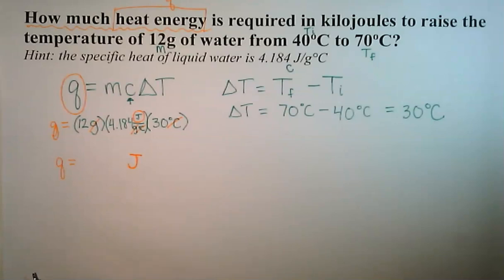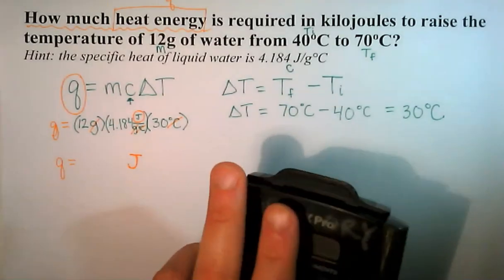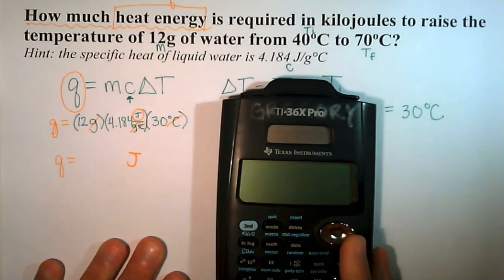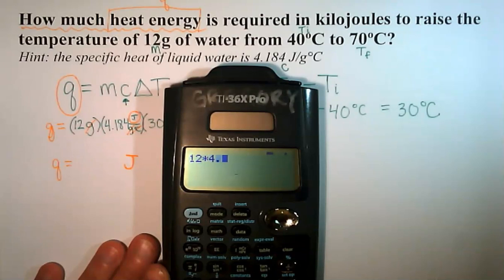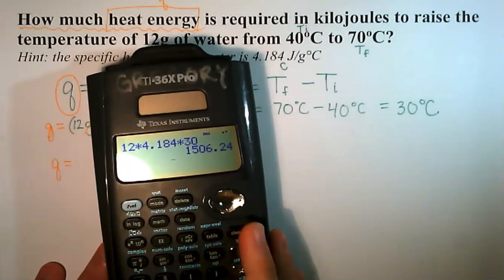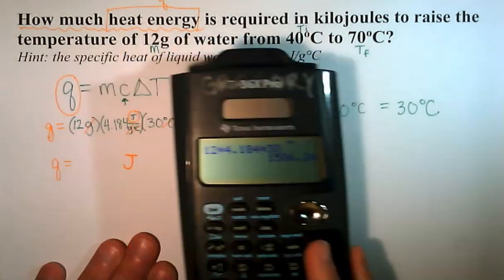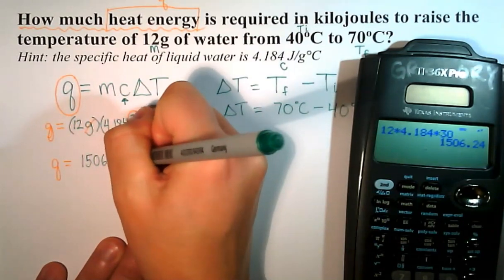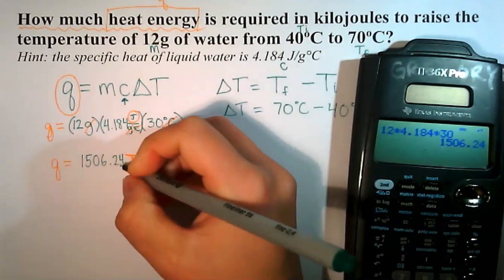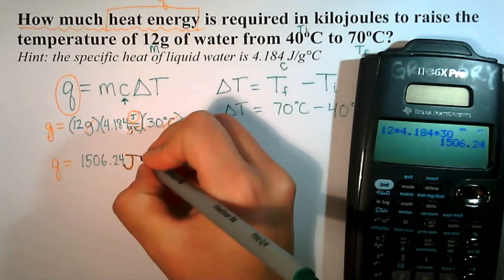Now we just need to use a calculator to multiply our numbers together. All of this is multiplication, it makes it nice and easy, so let's do 12 times 4.184 times 30, and I got 1506.24. And that value is in joules.